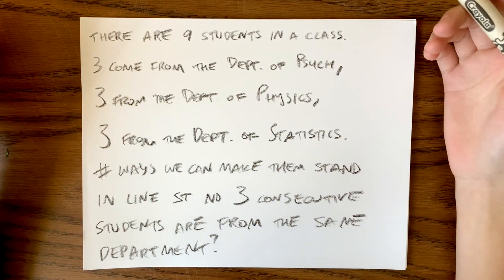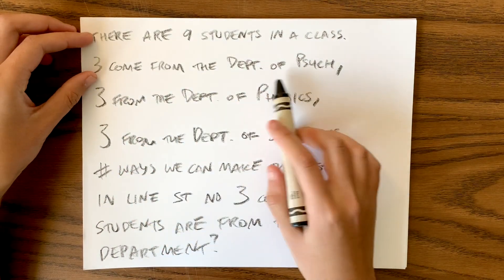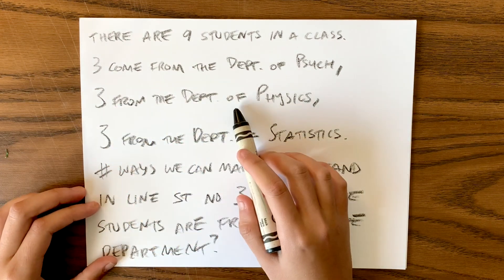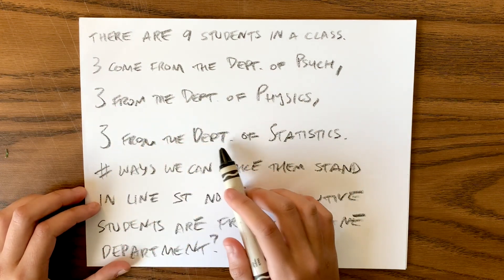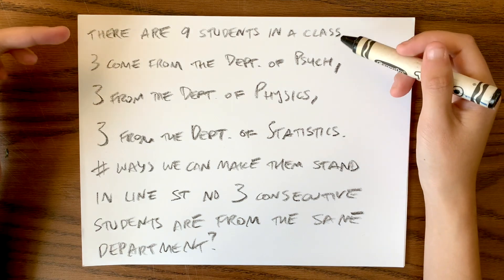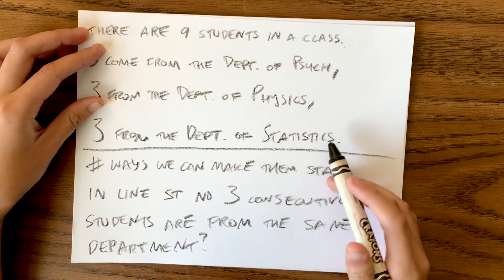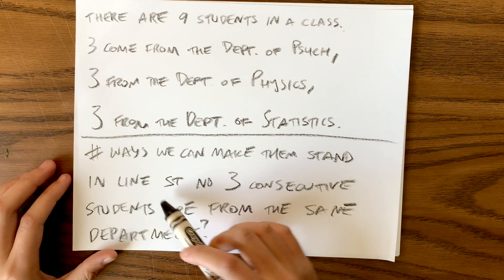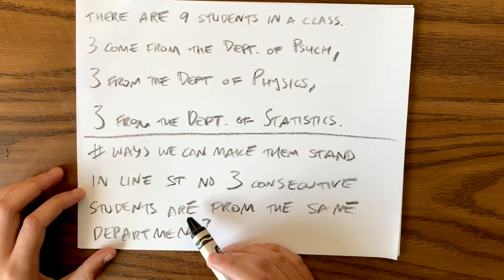There are nine students in a class: three from the Department of Psychology, three from the Department of Physics, and three from the Department of Statistics. We want to ask how many ways can we make them stand in a line such that there are no three consecutive students from the same department.